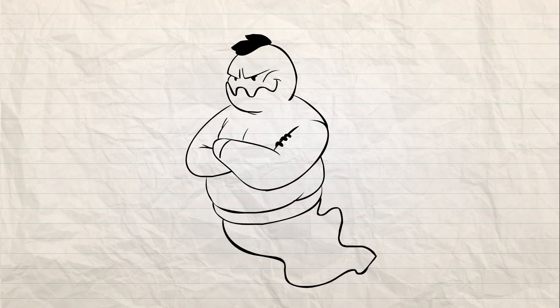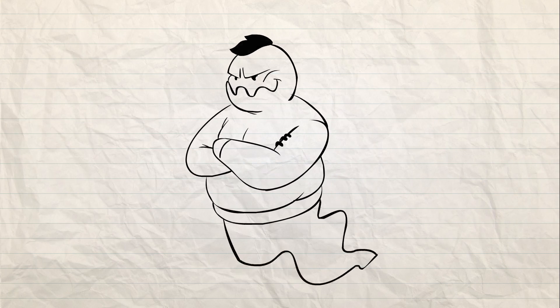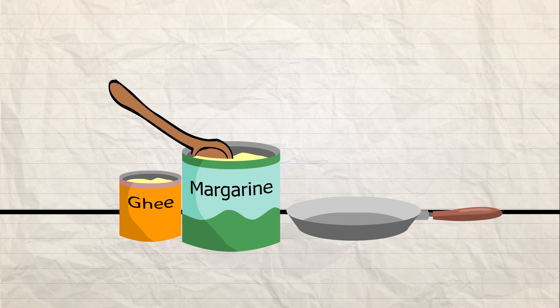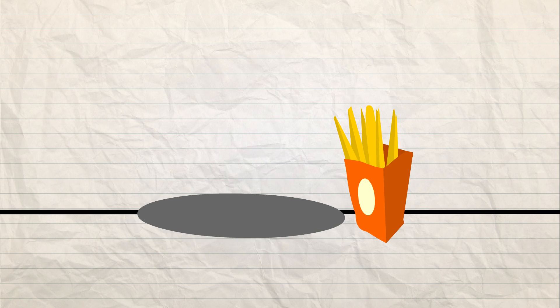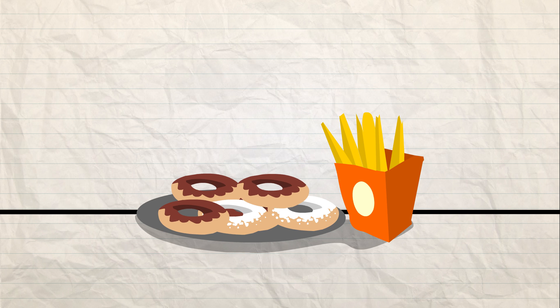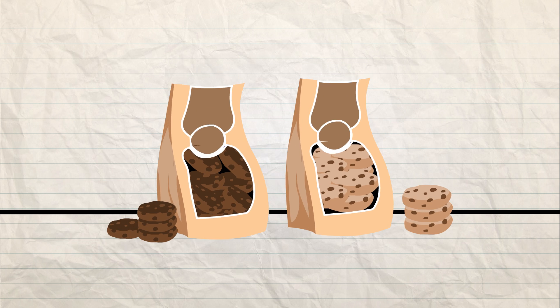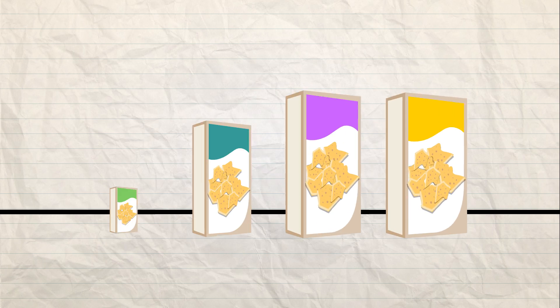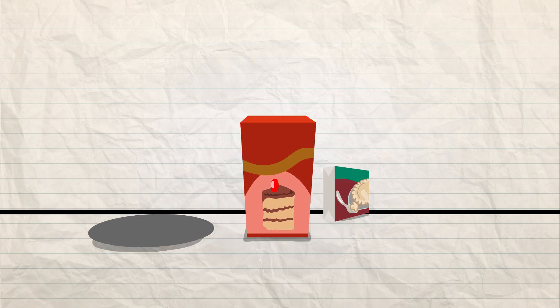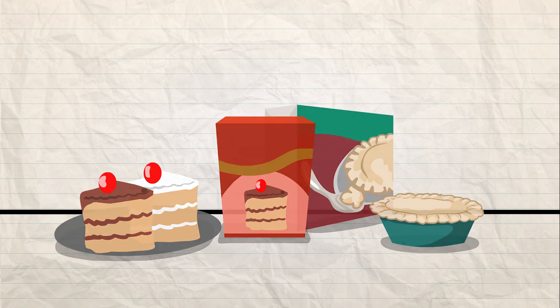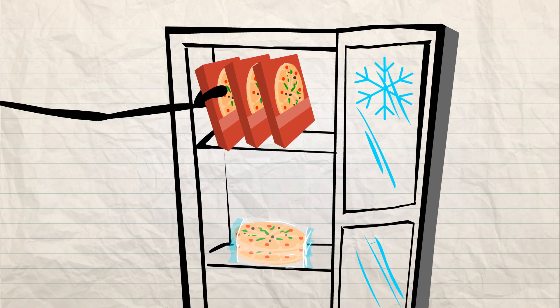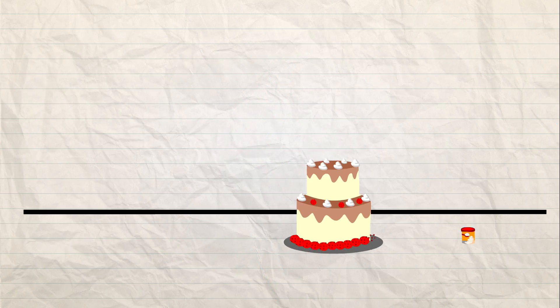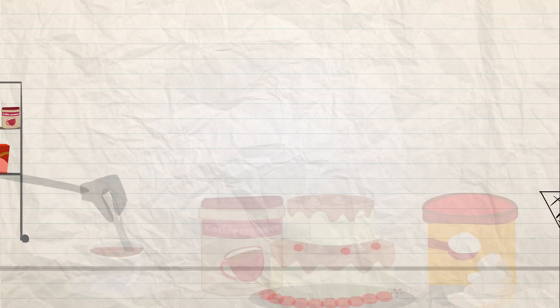Trans fat is commonly found in margarine and ghee, donuts and french fries, cookies, crackers, cakes, pies, frozen pizza, frosting and coffee creamers.